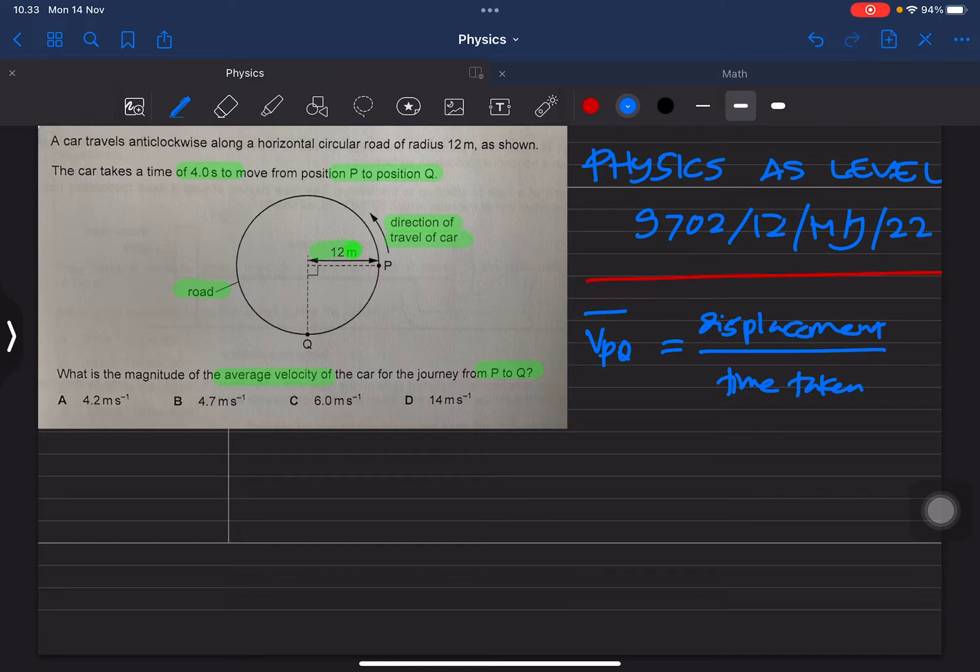This is displacement, not distance. It's not related with the circumference, but this is about displacement. P to Q as a Pythagoras distance, r and r when r is 12 meters.